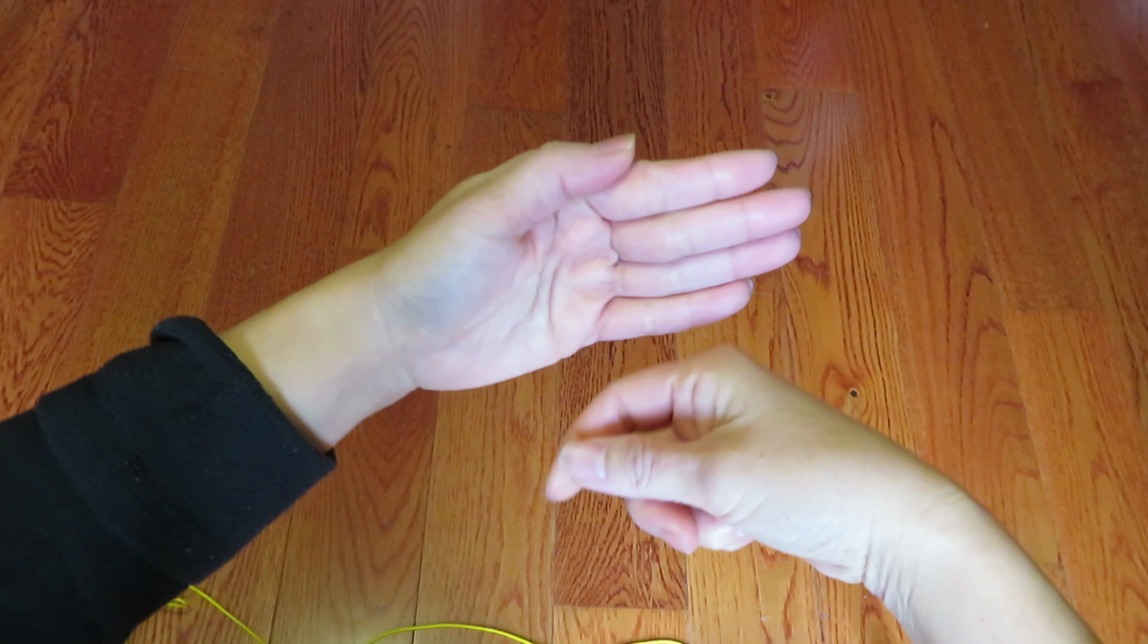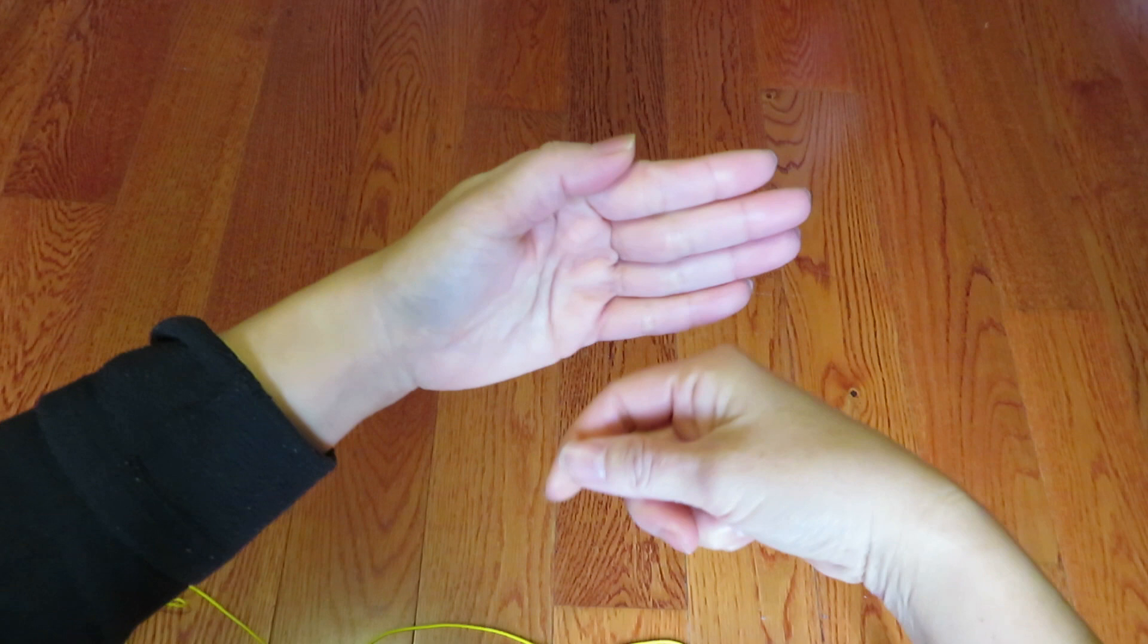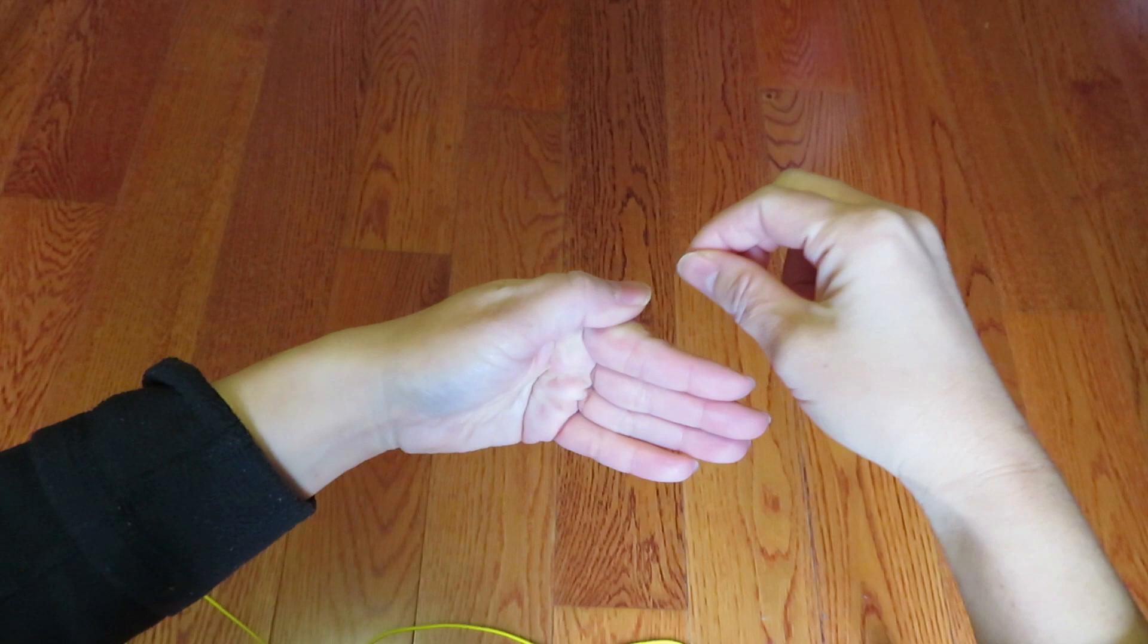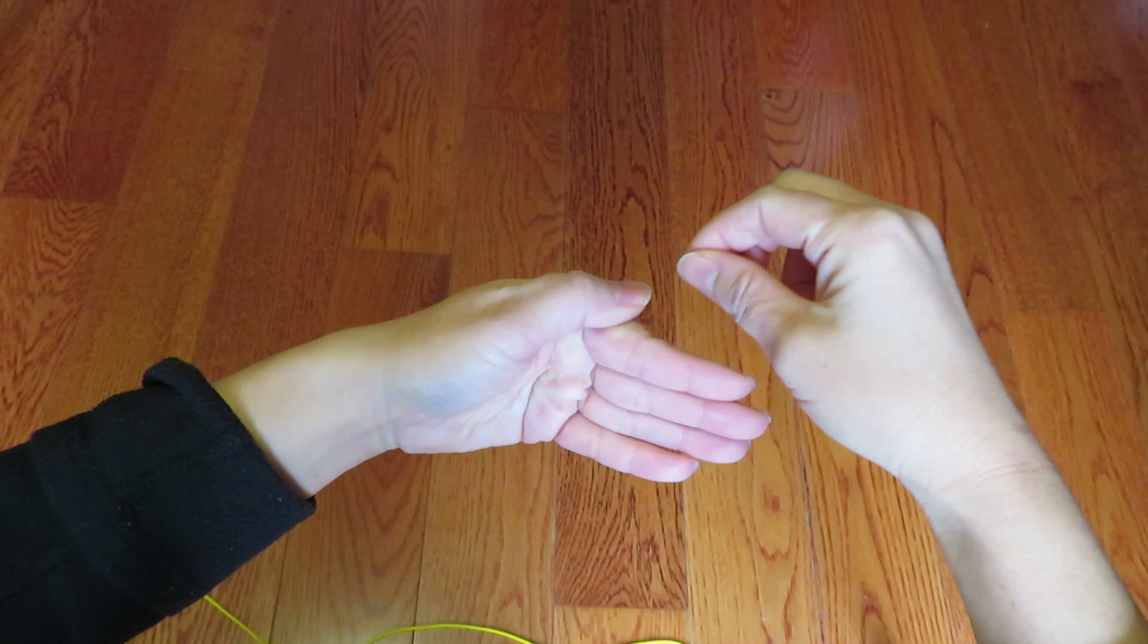And if you don't have it, don't worry. You can just grab a yarn, and the end of the yarn, you hold it, and then go one, two, three, four, five, six, seven. Seven times. And then you cut the yarn, and tie two ends together. And then make a loop. That's your best size for Cat's Cradle loop.